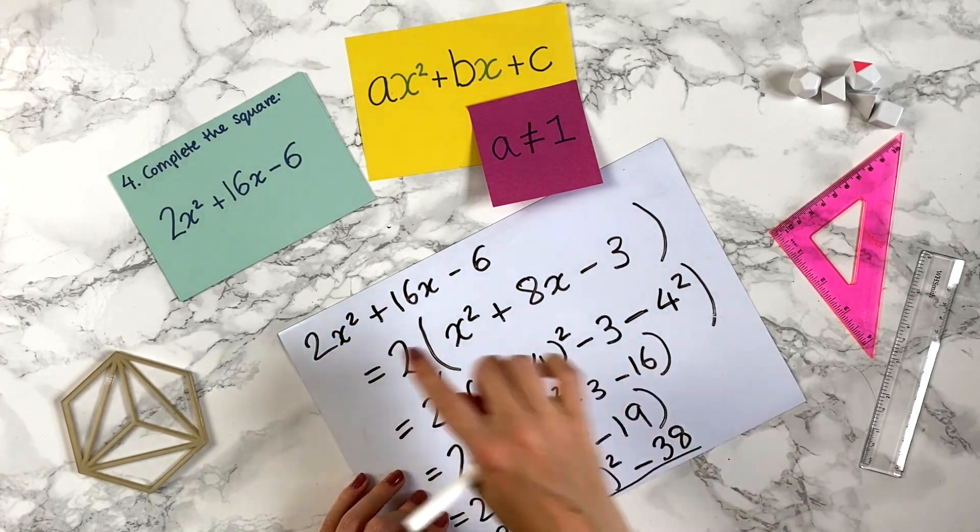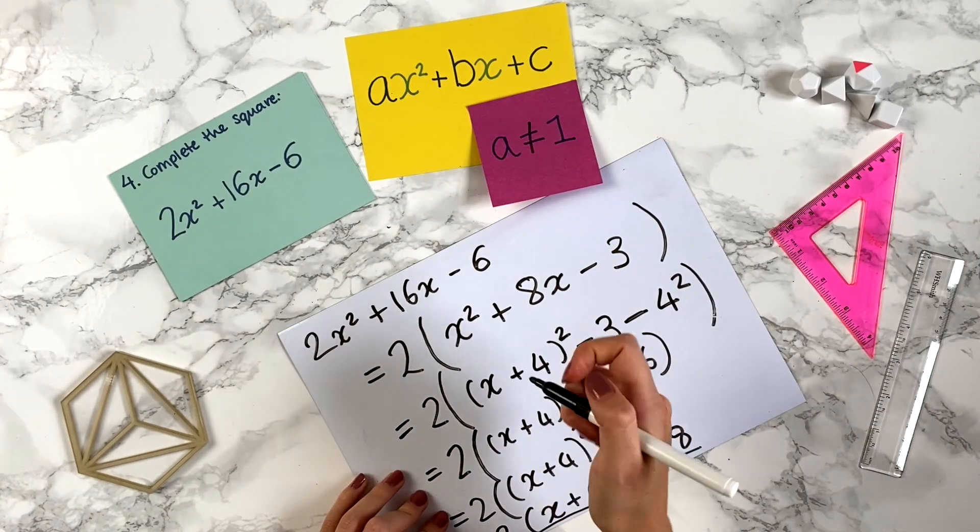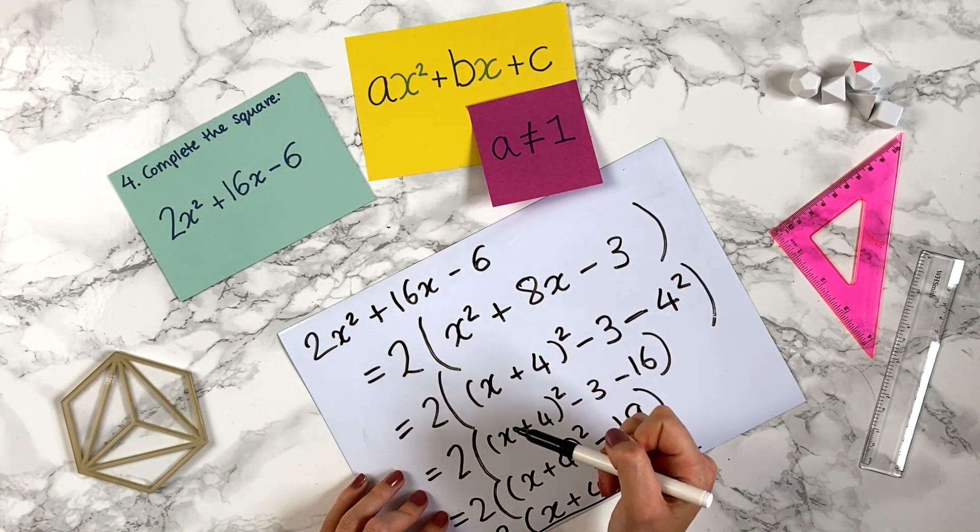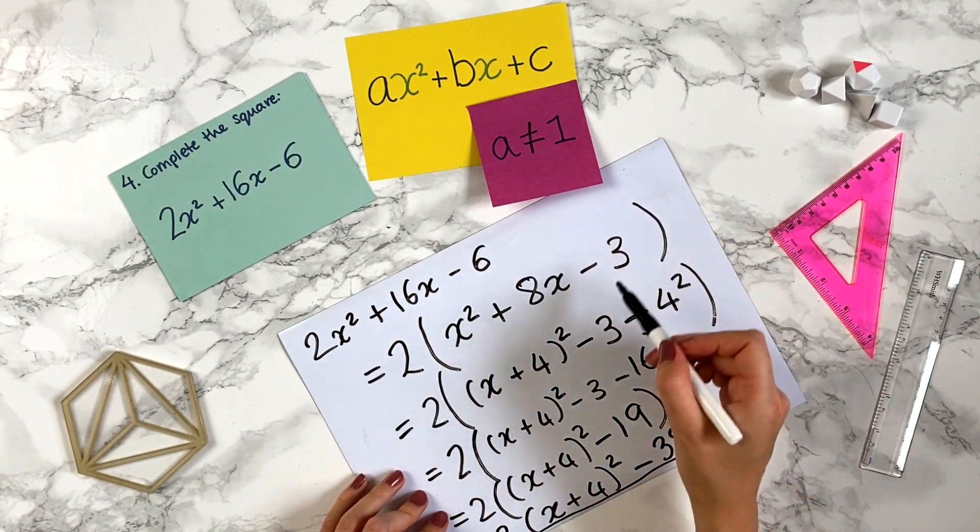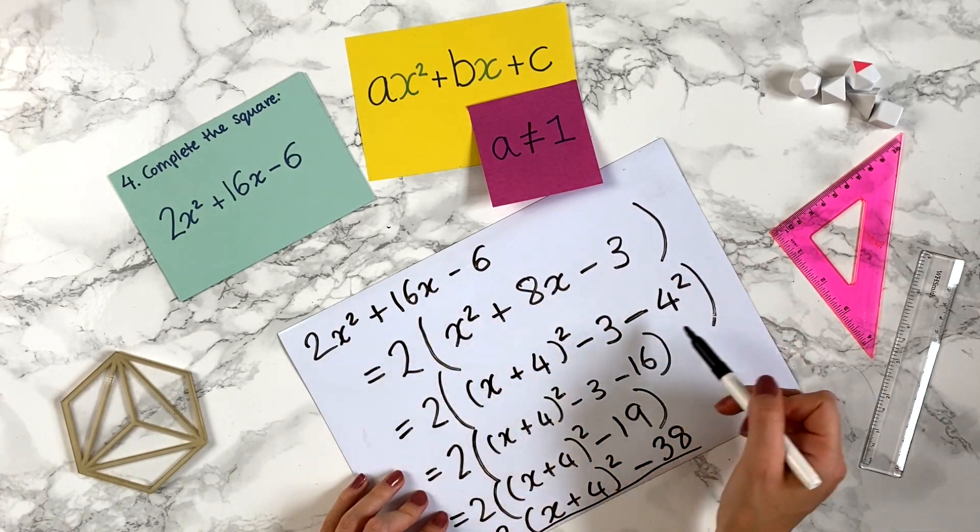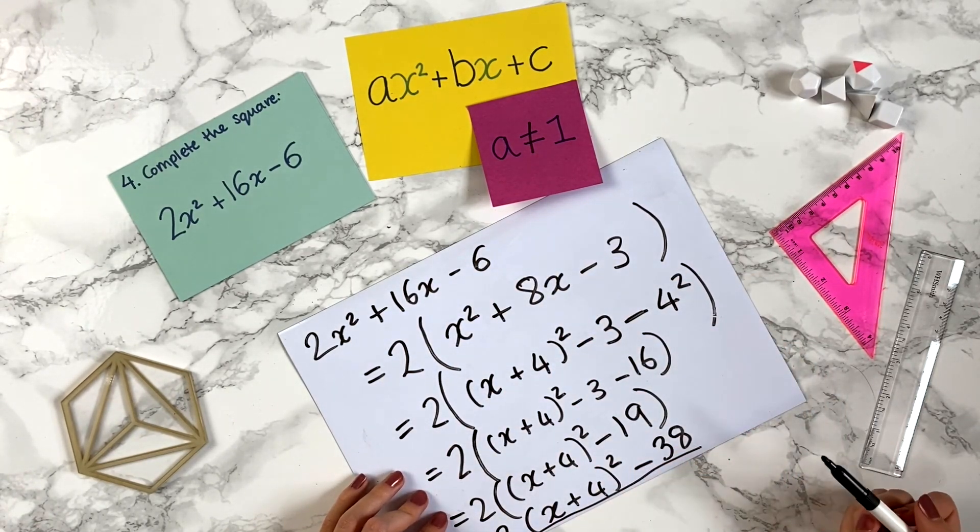So the way to deal with the number in front of the x squared is to factor it out, take it out of everything and work with it outside a bracket, and then use the normal method inside the bracket before multiplying it out again at the end.